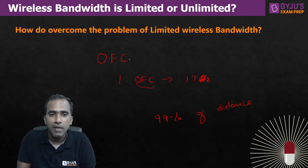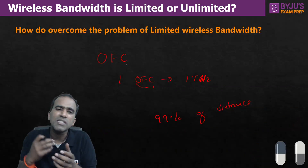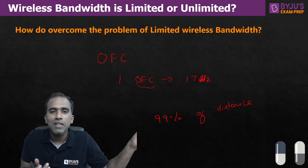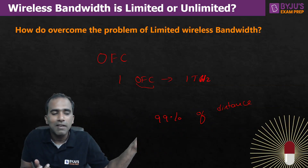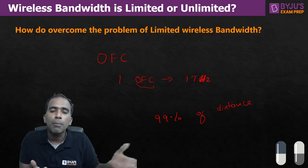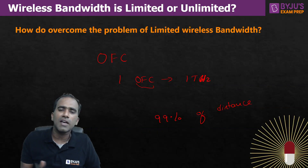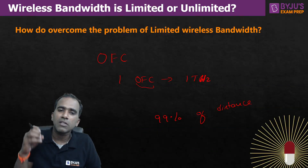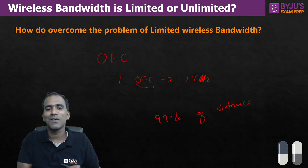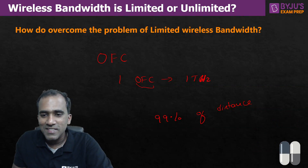Whatever problem we have with limited wireless bandwidth, we overcome it with the huge bandwidth of optical fiber cables. We run thousands of optical fiber cables across the oceans so that every country is connected. About 99.9% of our data goes through optical fiber cables.